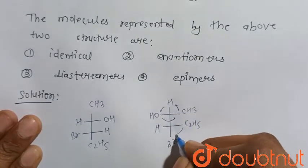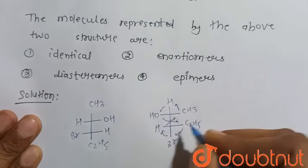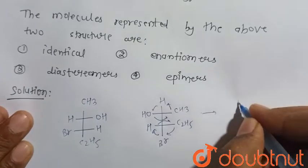Similarly here, this will come here and this H will go here. This bromine will go here. So it will change into this.